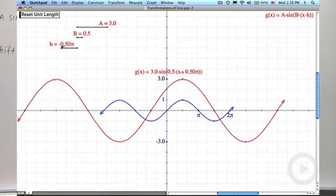h equals negative 0.5 pi, negative one-half pi. If you look at x equals 3 sine 0.5 times x plus 0.5 pi, that's x minus negative 0.5 pi. That means a shift to the left, half of pi.